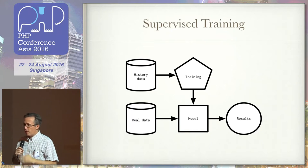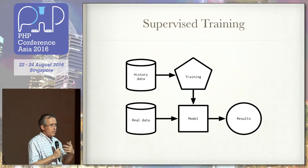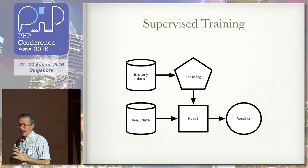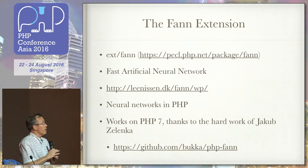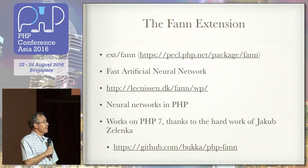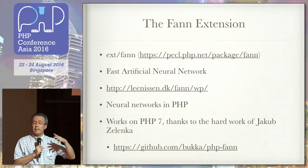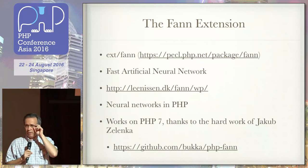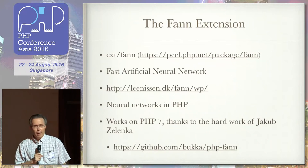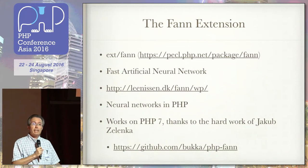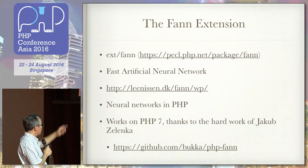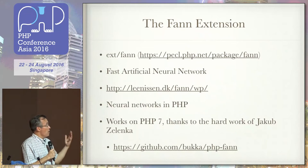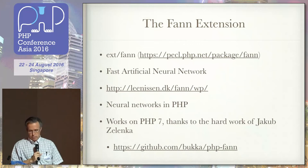We need an engine inside PHP that will process incoming data and produce the model — and that's the FANN extension: Fast Artificial Neural Network. It's a library that's been around for at least two decades, available to PHP since PHP 4, and it's working on PHP 7 — thanks to Jakub Zelenka for pushing that forward. It's a side compilation: download it with PECL, install it, it runs. It brings neural networks to PHP.